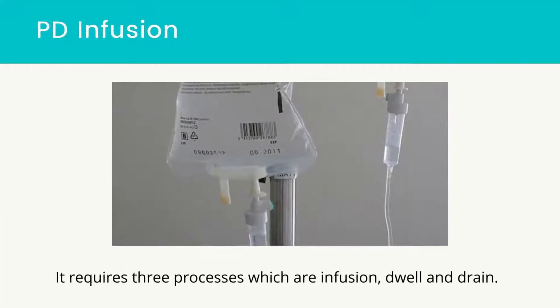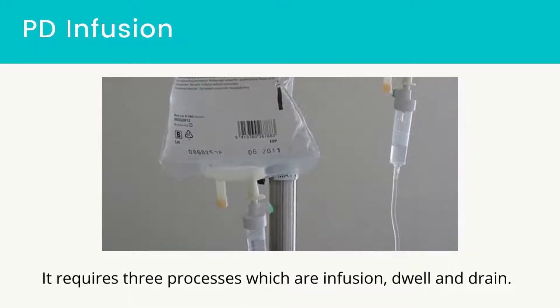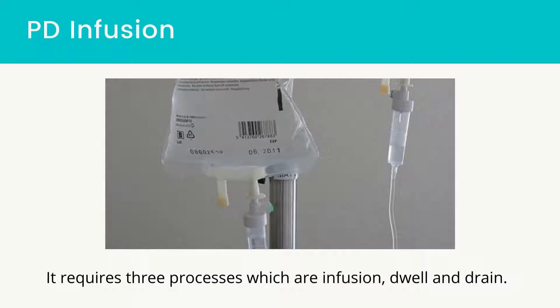PD infusion — one exchange consists of three processes: infusion, dwell, and drain. A fill is 1–2 litres of dialysate infused by gravity into the peritoneal space, which usually takes 10–20 minutes. The dwell time is the amount of time the dialysate solution remains in the peritoneal cavity, lasting 20–30 minutes to 8 or more hours depending on the type of dialysis used. The drain, or outflow, means fluid drains out of the body by gravity into the drainage bag.